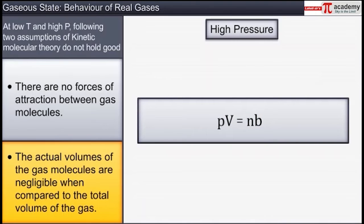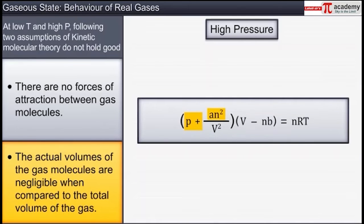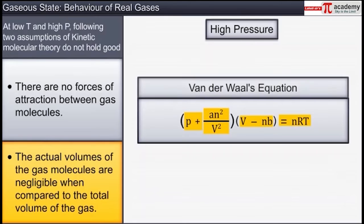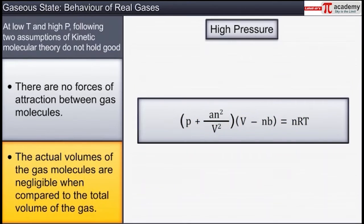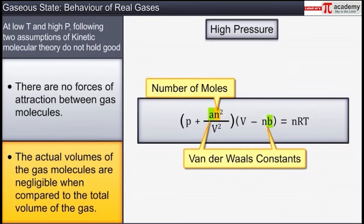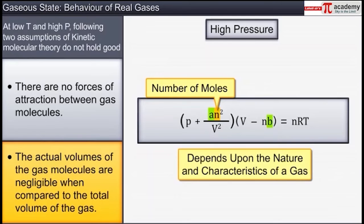After substituting the two corrections of pressure and volume in the ideal gas equation PV = nRT, we get: (P + an²/V²)(V − nb) = nRT. This equation is known as the van der Waals equation. Here n indicates the number of moles, and the constants a and b are called van der Waals constants. The values of a and b depend upon the nature and characteristics of a gas, and the value of a is independent of temperature and pressure.